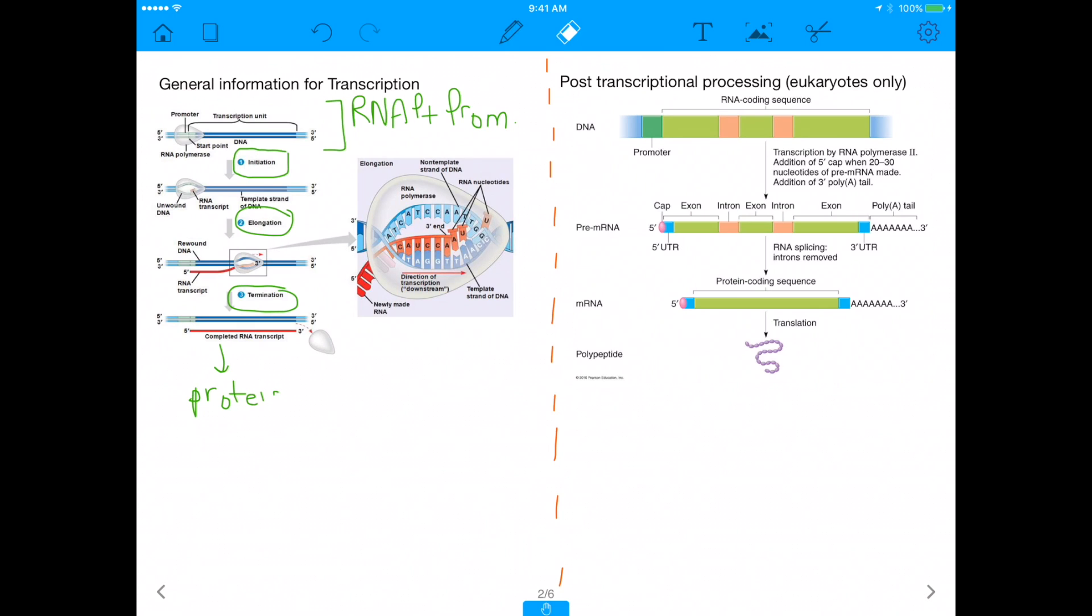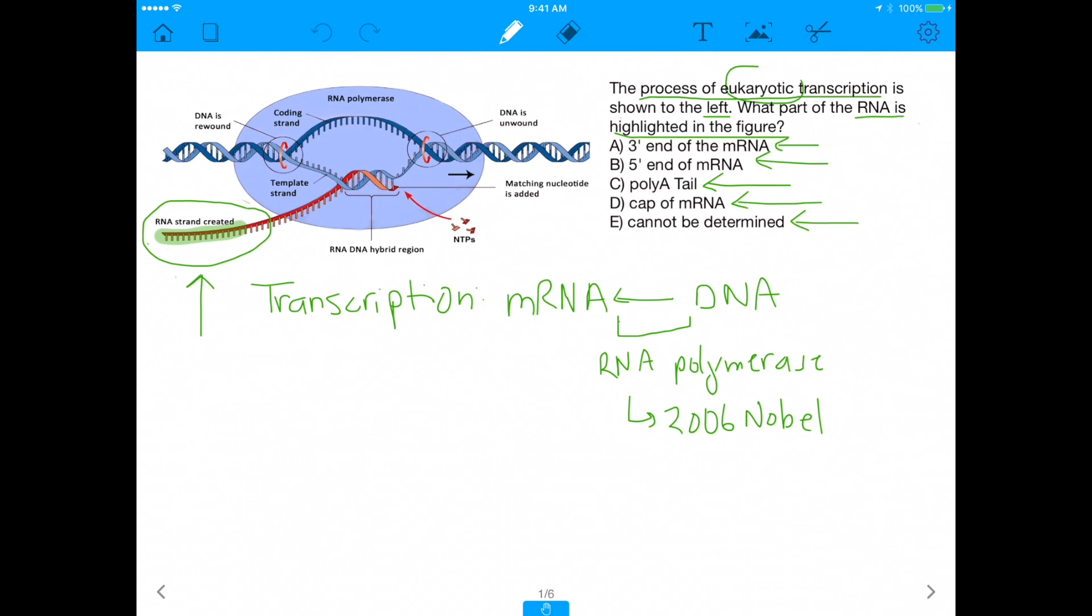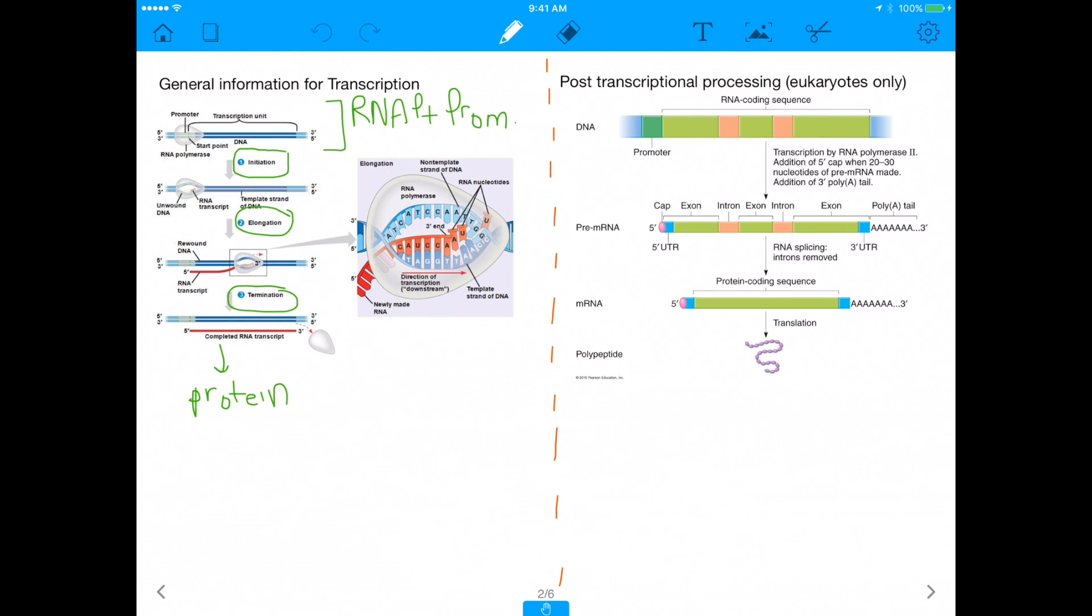But there's one thing that's imperative that we forgot to mention earlier. And the thing that we forgot to mention earlier is this question is specifically looking at eukaryotic transcription, right, eukaryotic. And eukaryotes have this thing called post-transcriptional processing, which is described by the right hand corner, I mean the right corner of the screen right now.